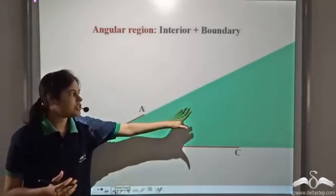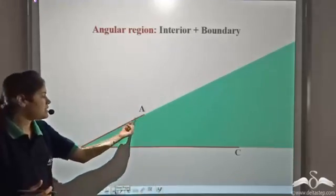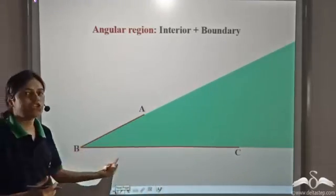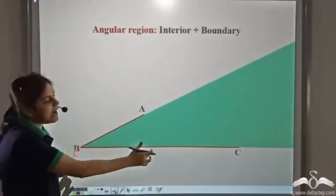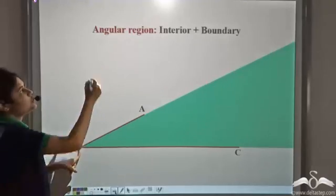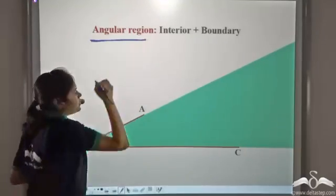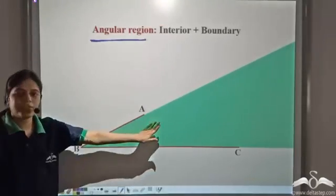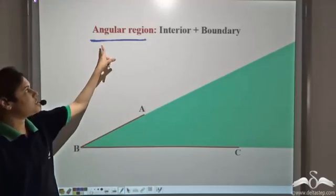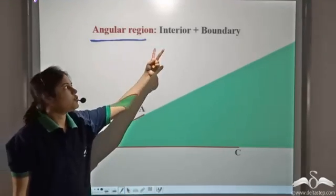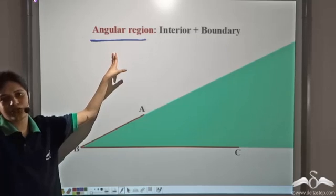The interior region of the angle — the green shaded region — plus the boundary of the angle, that is arms AB and BC, together constitute the angular region. So the interior region plus the boundary makes the angular region.